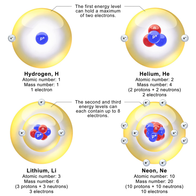Recent research has shown that even thunderstorms can produce neutrons with energies of up to several tens of MeV. The fluence of these neutrons lies between 10⁻⁹ and 10⁻¹³ per millisecond per square meter depending on the detection altitude. Even stronger neutron background radiation is produced at the surface of Mars, where the atmosphere is thick enough to generate neutrons from cosmic ray muon production and neutron spallation, but not thick enough to provide significant protection from the neutrons produced.